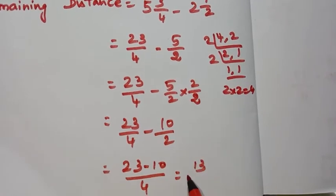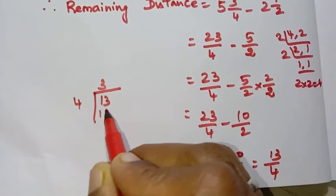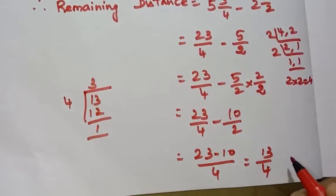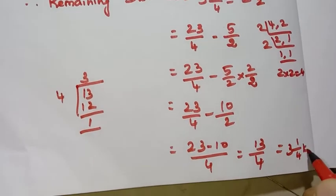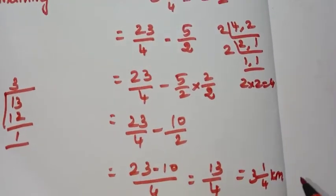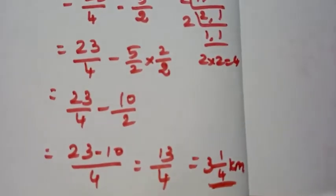23 minus 10 equals 13, so 13/4. If we divide, 13 divided by 4 is 3 with remainder 1, so the answer is 3 1/4 km. The remaining distance equals 3 1/4 km.